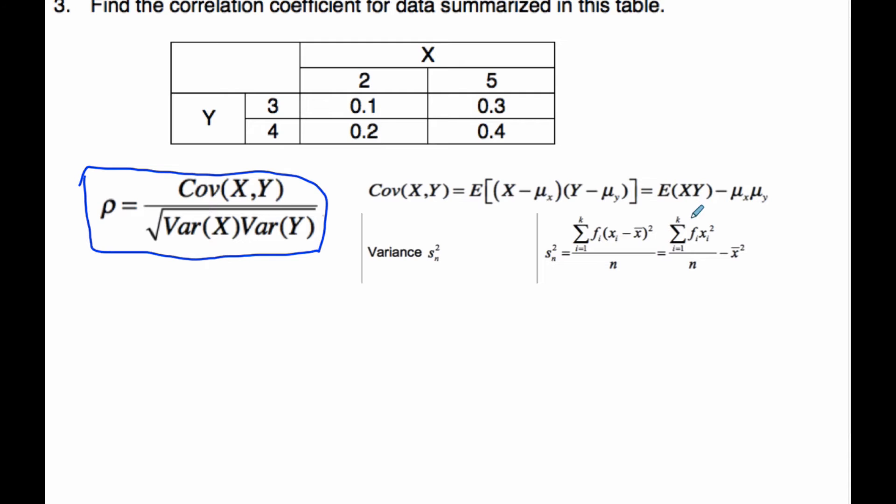Earlier on, we started to do some of these calculations. We're going to have to do some of these values here. The expected value of XY, if you recall, is 2 times 3 times 0.1 plus 5 times 3 times 0.3 plus 4 times 2 times 0.2 plus 5 times 4 times 0.4. When I do all that and add it up, I end up with 14.7.